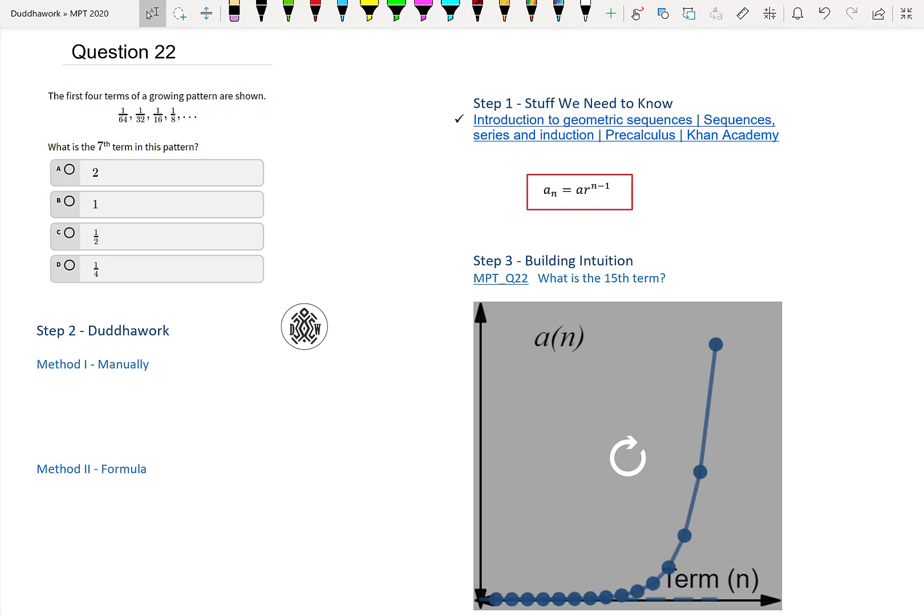Hello everyone and welcome to another episode of Do The Work. Here we're going to cover question 22 of the math proficiency test for teachers in Ontario. Before we get going, I would strongly appreciate if you could hit the subscribe button below and hit the bell beside it. That way you could support the channel while also receiving notifications for all future videos. So here we have a question where we're given four terms of a growing pattern.